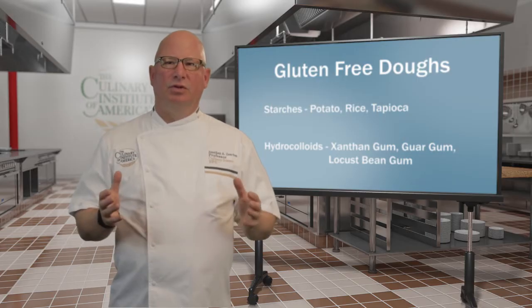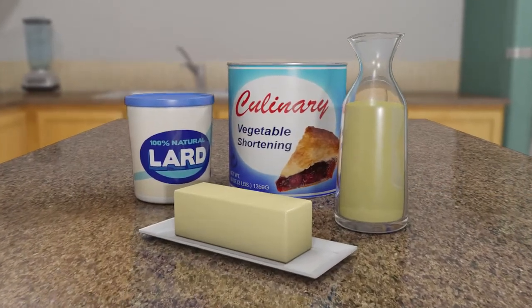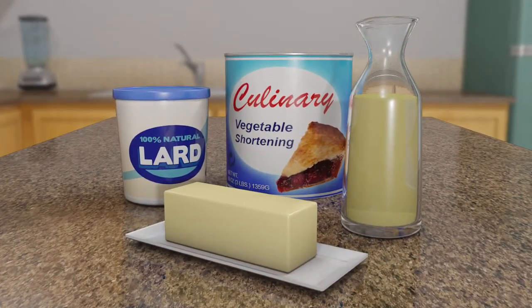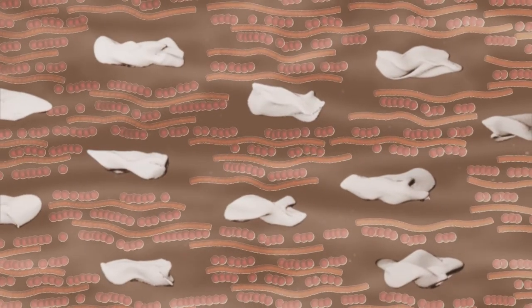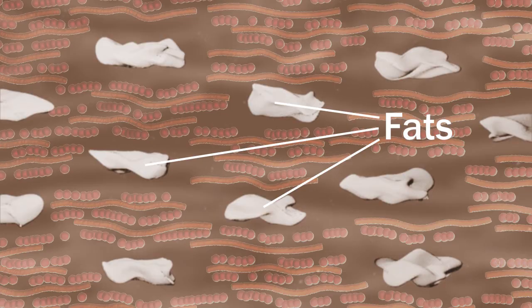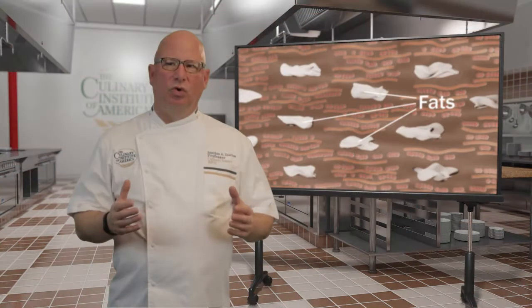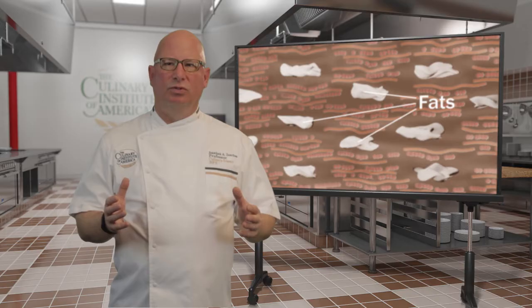Formation of gluten can be reduced by the inclusion of fats in the recipe, as these physically prevent gluten proteins from making contact. As a result, the gluten aggregates are smaller and shorter than they would be, which is why adding fat is called shortening the gluten.